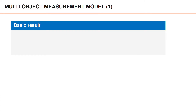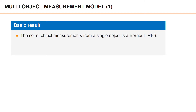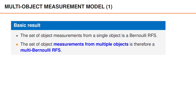The next step is to find a model for the object measurements when there are multiple objects, and the overall result is quite easy to understand. We know that the set of object measurements from a single object is a Bernoulli random finite set, and we also know that the sets of measurements from different objects are independent. The set of object measurements from multiple objects is therefore a multi-Bernoulli random finite set, since it is simply the union of several independent Bernoulli random finite sets. This is the key result presented in this video.